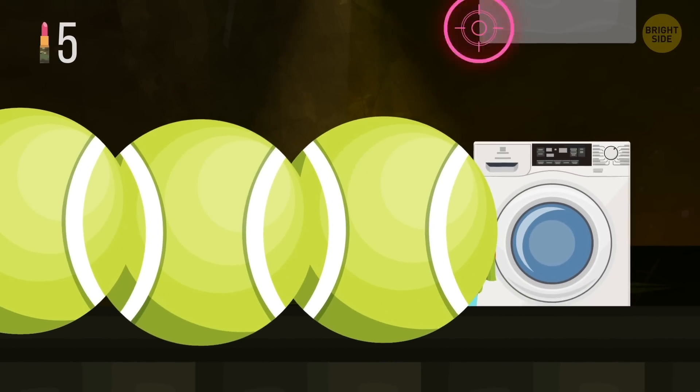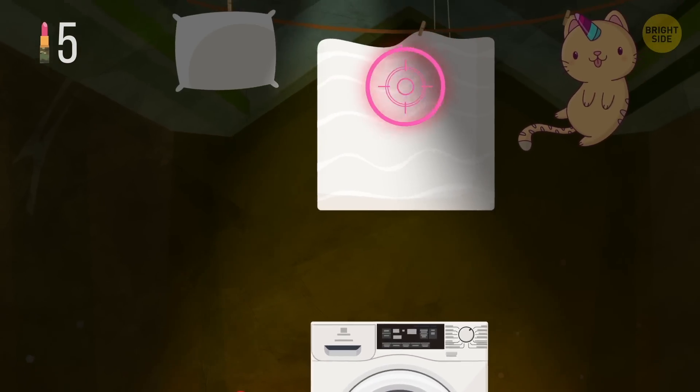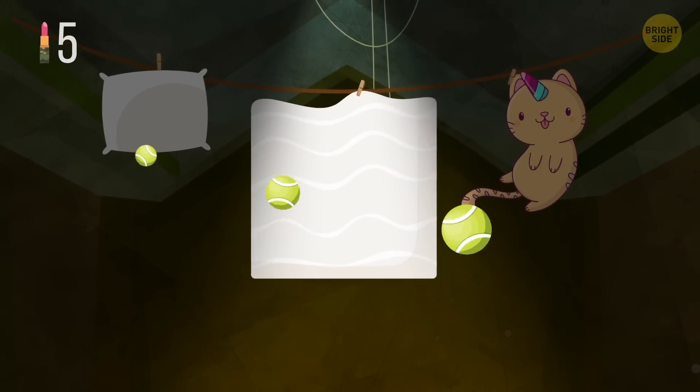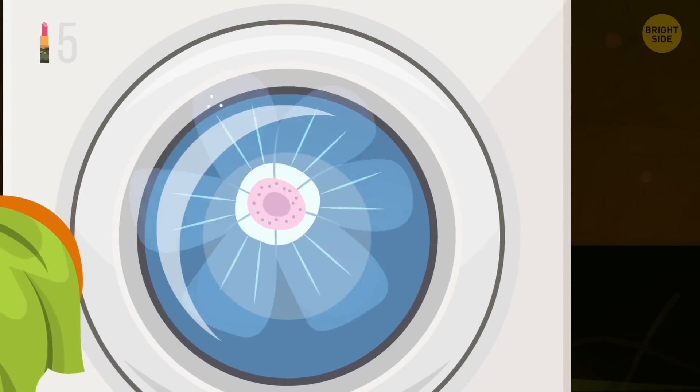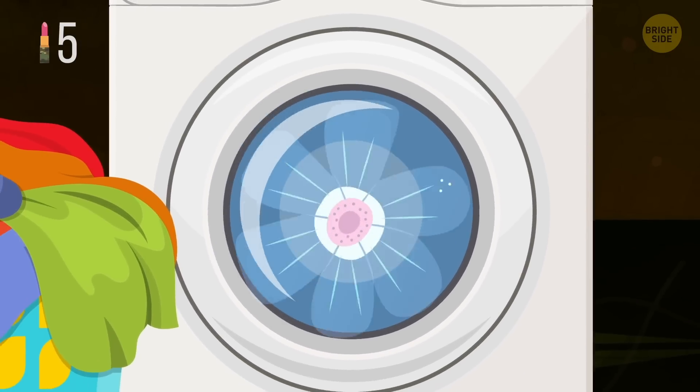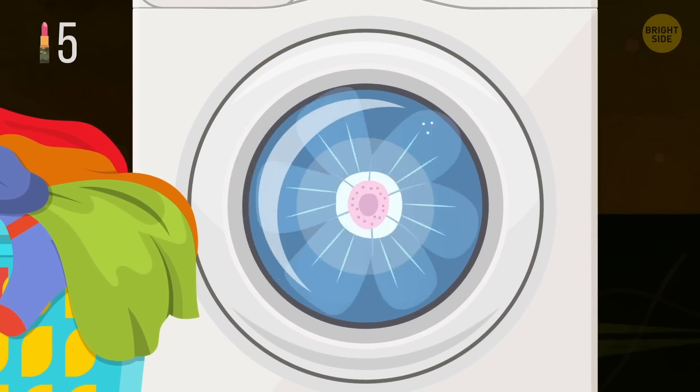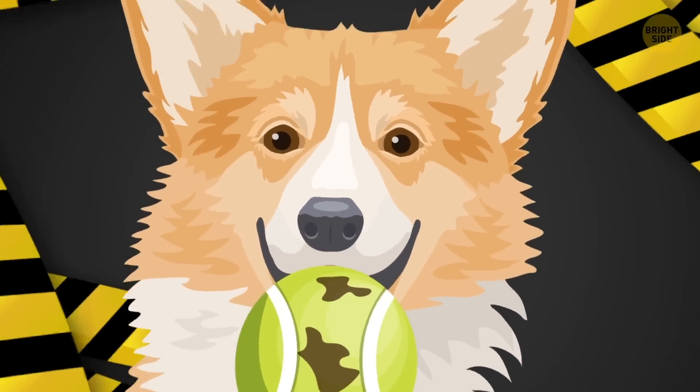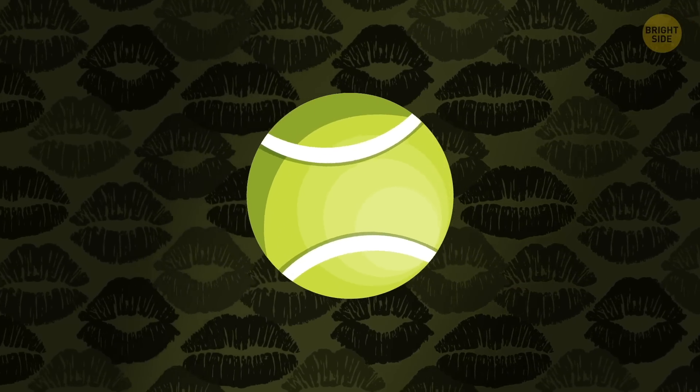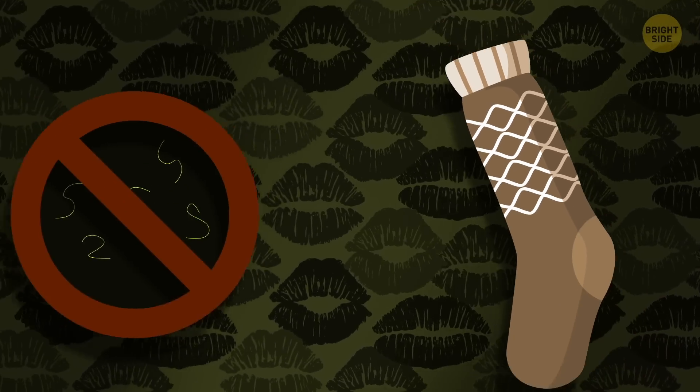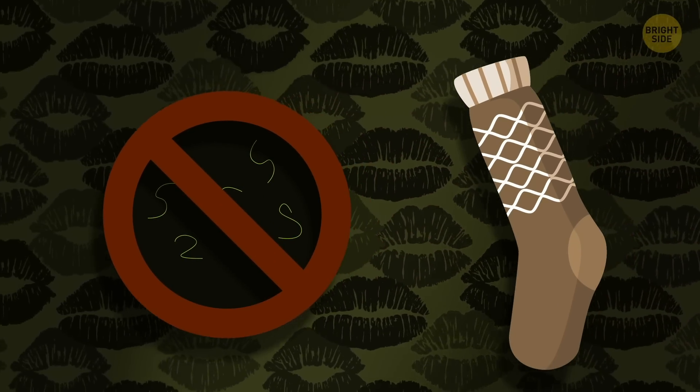Besides, you can add two or three tennis balls into the dryer together with pillows, comforters, and whatnot. They'll help your linen dry faster and remain fluffy and nice. Remember to make sure to use clean tennis balls. Also, you can wrap them in old socks so that the green fluffiness doesn't stick to your clothes.